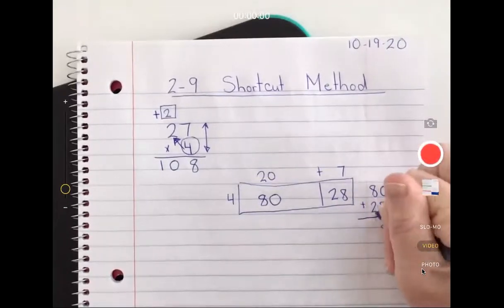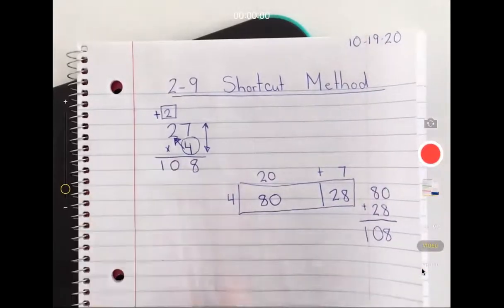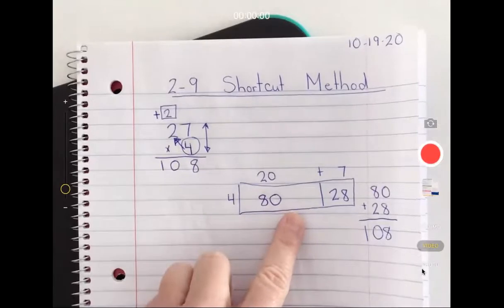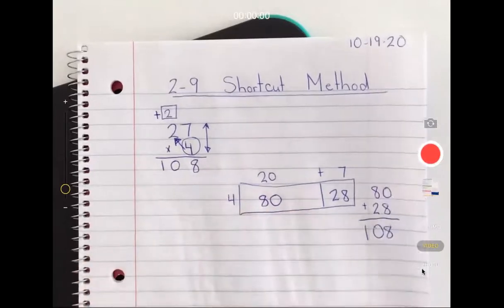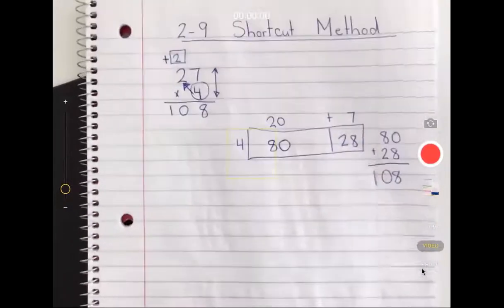I know four times twenty, four times two is eight, put the zero on, and four times seven is 28. I add my two products together and we checked out. Awesome! This is a little faster.